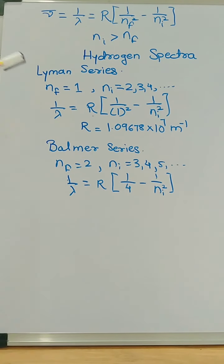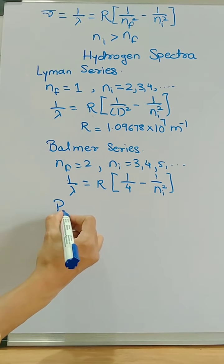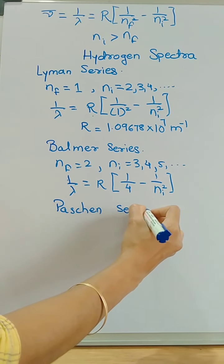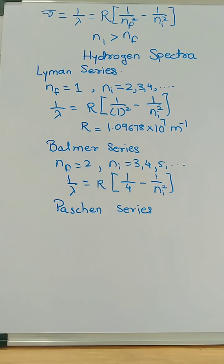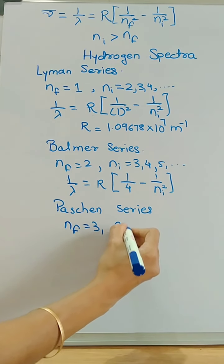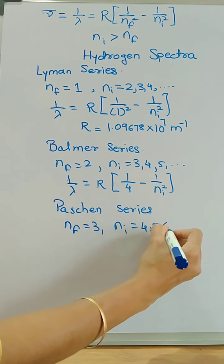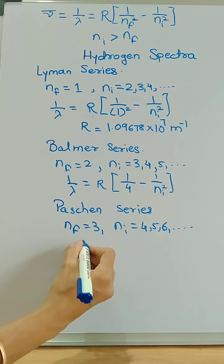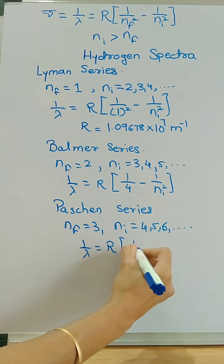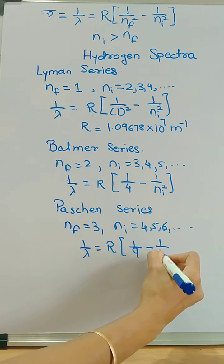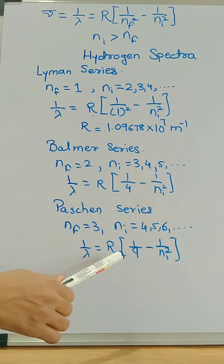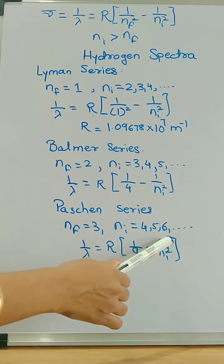The third series is the Paschen series. For Paschen series, ni will have values greater than 3, that is 4, 5, 6 and onward. The equation for the wavelength is 1/λ = R × (1/9 − 1/ni²).